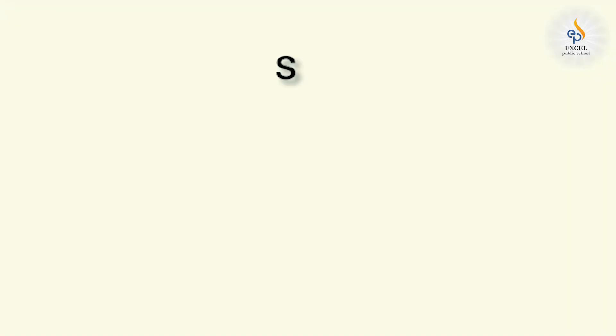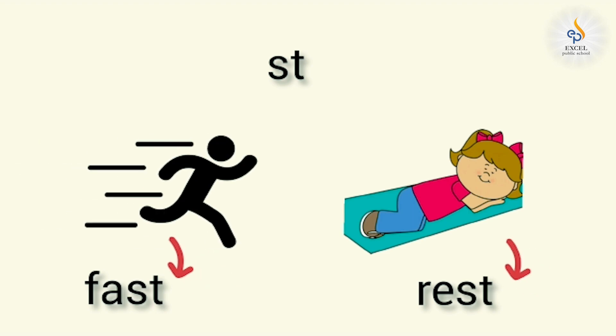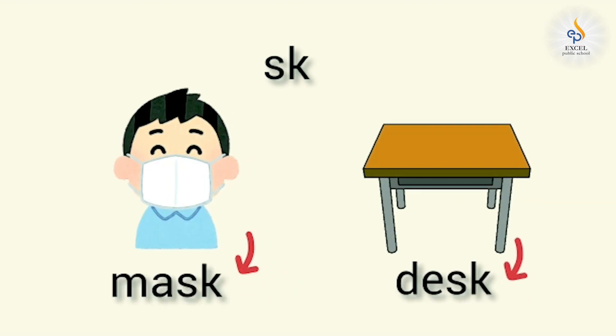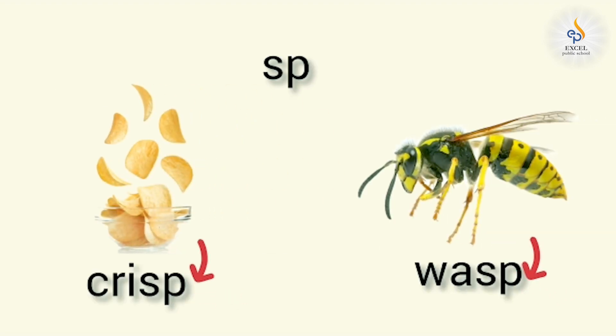Come on, let's practice some words that have blends at the end. S, T, st. Fast, rest. Mask, desk. S, P, sp. Crisp, wasp.